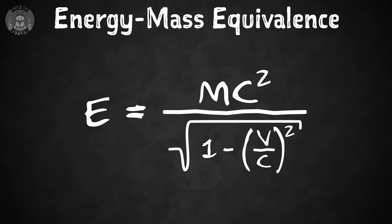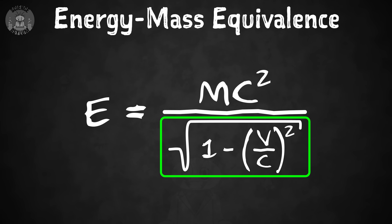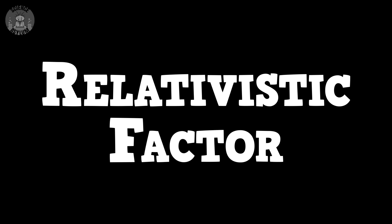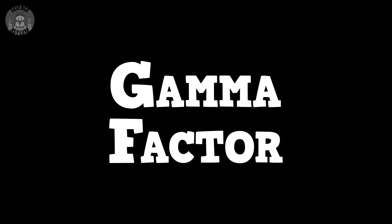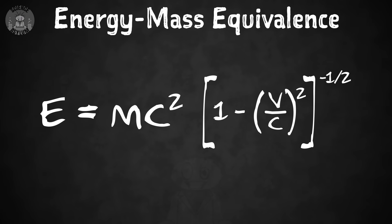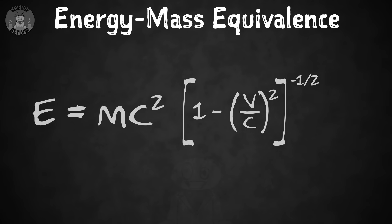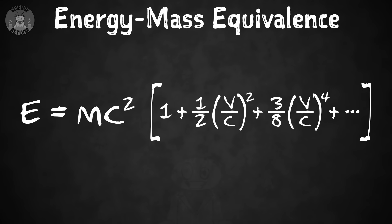Back in the day, Albert was doing some math, and this relationship popped out for energy. You can see it's a little more complicated than the famous equation — it's got this big square root in the bottom. That root shows up everywhere in relativity. We call it the relativistic factor, the gamma factor, or the Lorentz factor. Einstein went a little further, moving that root up to eliminate the fraction and then expanding it using the binomial theorem.